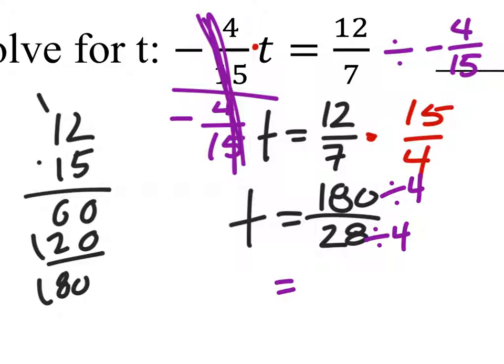One-eighty divided by four. That would be forty-five. Yeah, okay. And twenty-eight divided by four is seven. That's good.